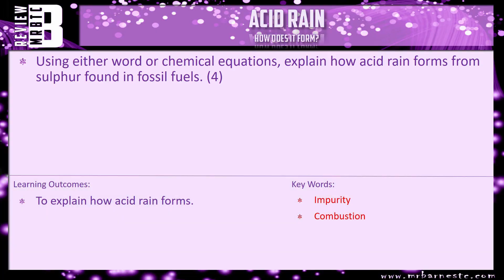I have a review question for you: using either word or chemical equations, explain how acid rain forms from sulfur found in fossil fuels. You don't get a mark for just naming the impurity here — we want you to use word or symbol equations to show sulfur reacting with oxygen, what it forms, and then how that reacts with water in the clouds and what that forms.